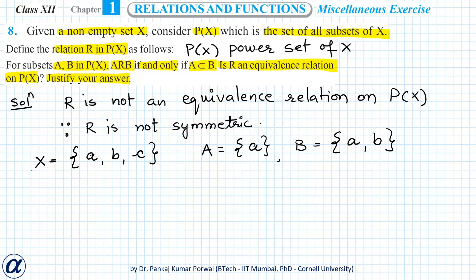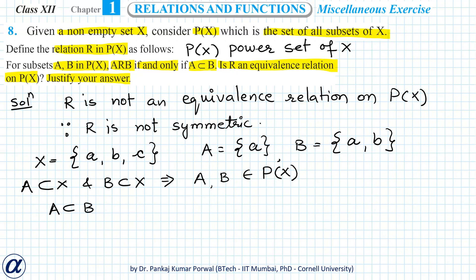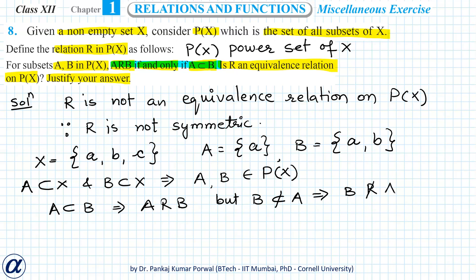Now because A is a subset of B, this implies A is related to B — that is how we have defined our relation. But B is not a subset of A, so this implies that B is not related to A. Here we see that A is related to B but B is not related to A, meaning (A, B) belongs to R but (B, A) does not belong to R.